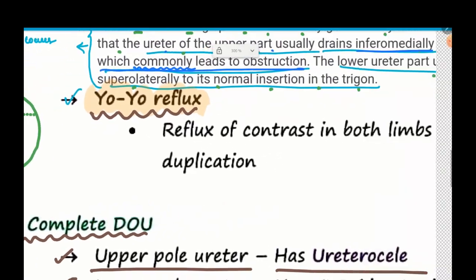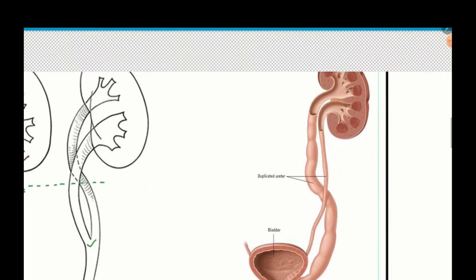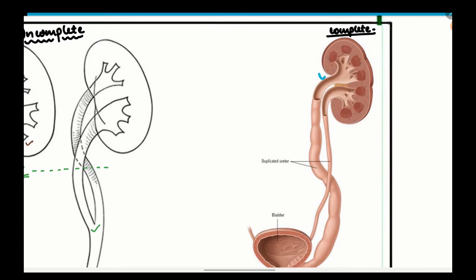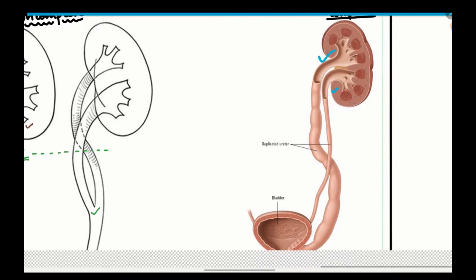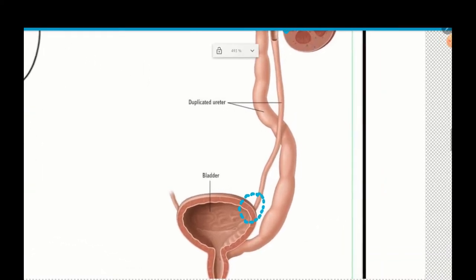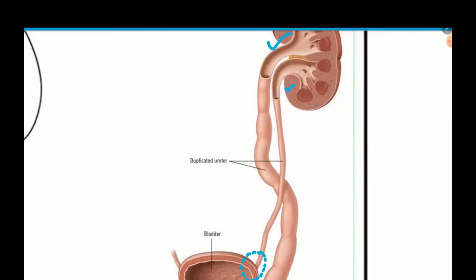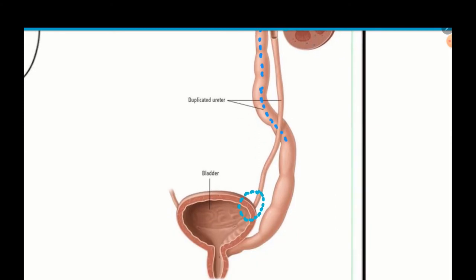Looking at the picture of complete duplication, we have two ureters — one superiorly located and one inferiorly located. The inferiorly located ureter normally ends up in the bladder trigone. The superiorly located ureter ends up in an ectopic site away from the bladder. This is what the Weigert-Meyer rule describes.